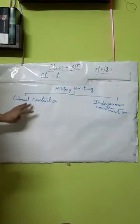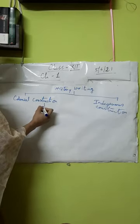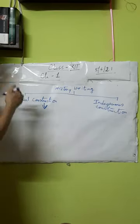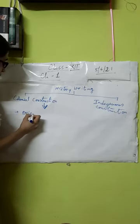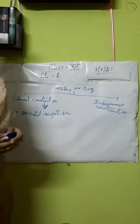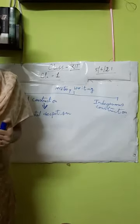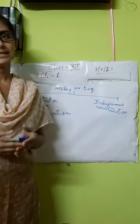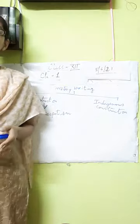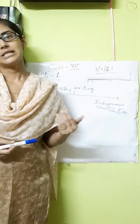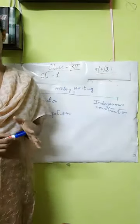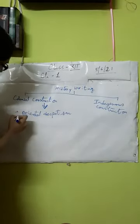Today we will read about the colonial construction of history — how the colonialists or imperialists constructed Indian history. The first concept we get from the writings of British historians is oriental despotism. The British historians portrayed that Indians had no ideology, no value for their own history, and no political ideology — that rule of law was absent in the Indian context. They argued that in India there was 'oriental despotism': whatever the ruler said, the people had to follow. This is the basic concept of oriental despotism.